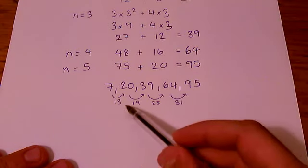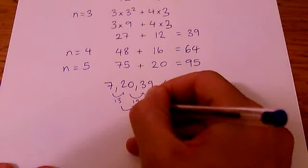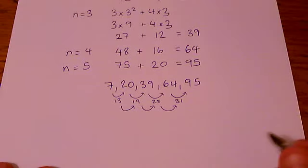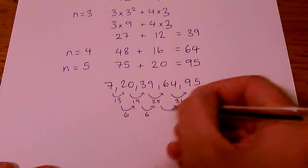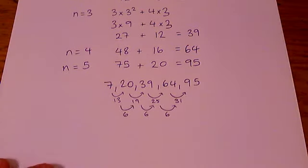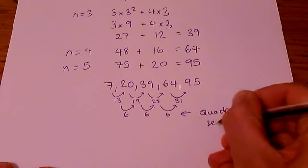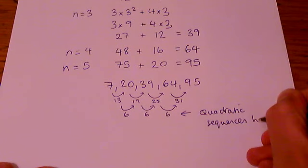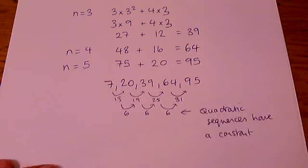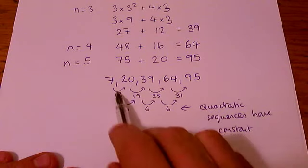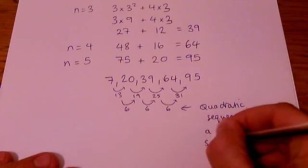Now that doesn't look particularly special but the thing about a quadratic sequence is that if you then find the difference between those numbers it should be a constant. So 13 to 19 is 6, 19 to 25 is 6 and 25 to 31 is 6. You can always check because quadratic sequences have a constant second difference. We call this the second difference between the terms, so not the difference between the terms but the difference between those differences, a constant second difference.